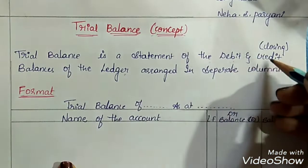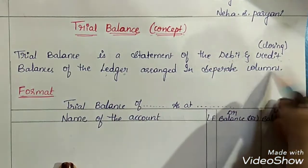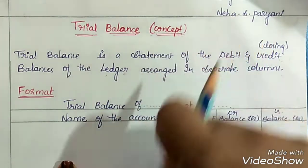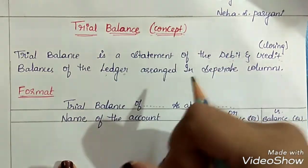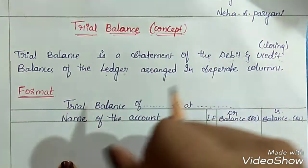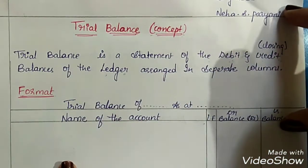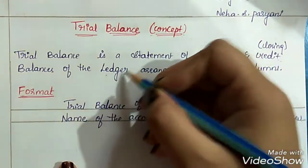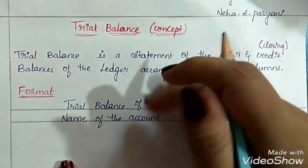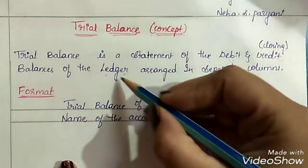Trial balance is a statement of the debit and credit or closing balances of the ledger arranged in separate columns. While maintaining the records of the business organization, the first step would be recording the transactions. We record the transaction in the book of prime entry, or we also call it as journal. We make journal entries for all the transactions. After that, we post them into ledger — that is separate individual accounts for each item in journal. So the second step would be ledger. After ledger, the third step is trial balance. Trial balance is a statement — remember, it is not an account. It is a statement which contains the list of closing balances of the ledger accounts.